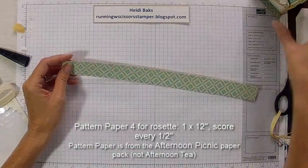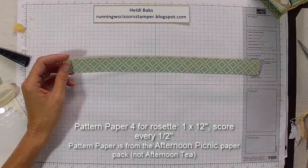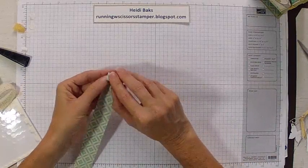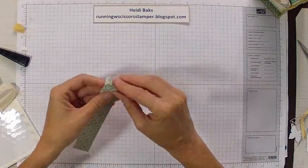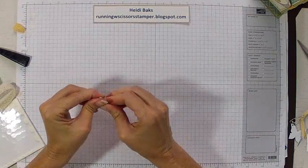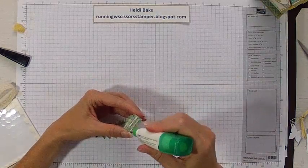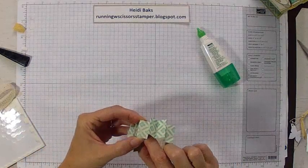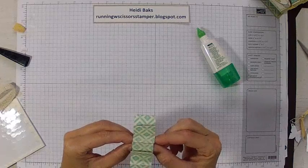What I have here is a one by twelve inch piece of patterned paper. These patterns, by the way, are from the afternoon tea pack. And I scored them every half of an inch. So you're going to do mountain and valley folds for this. Okay. You could also run it through that accordion ribbon. I don't know what they call it. The dye that does the accordion. The accordion rosettes. I guess they call it rosettes.